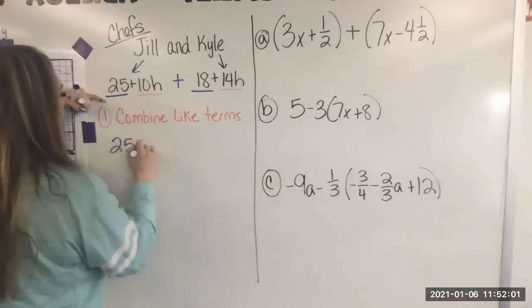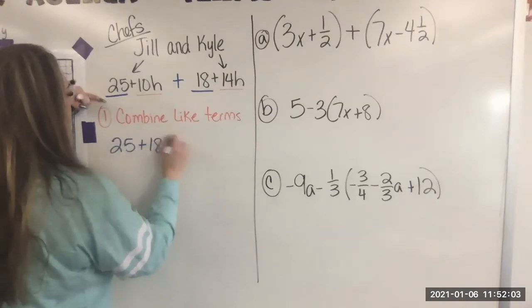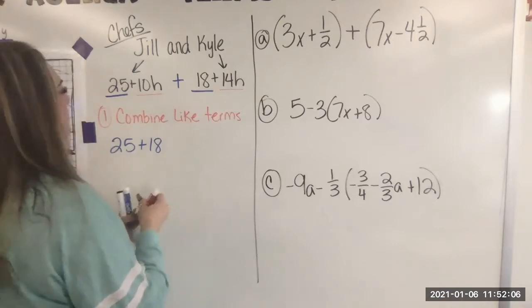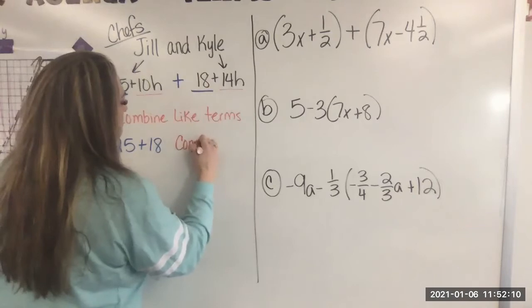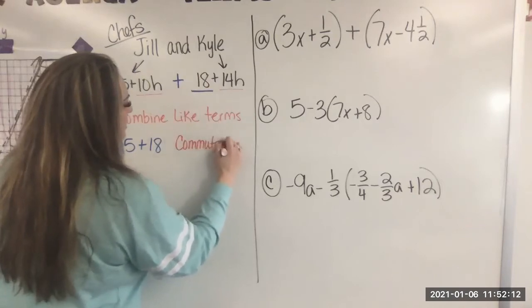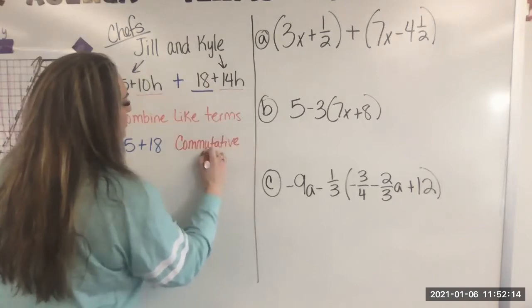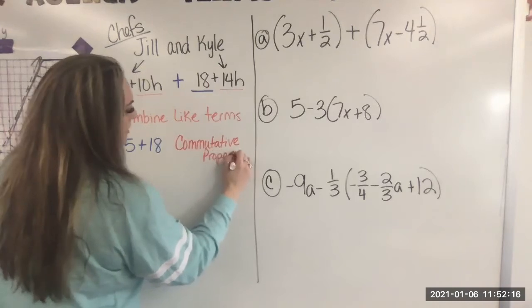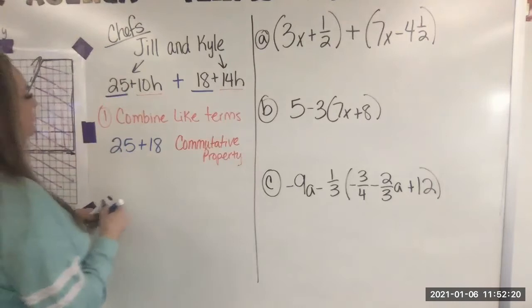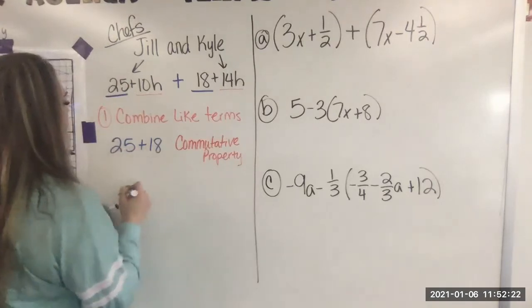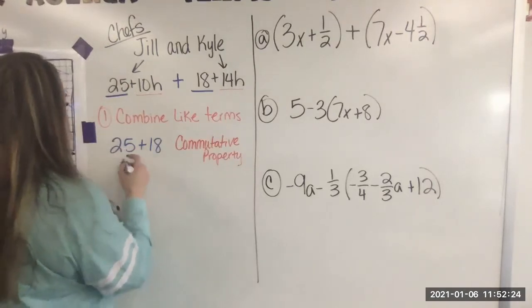So we're using the commutative property. We're rearranging the order. We're moving things around. That's the commutative property to put our like terms next to each other. So we add these together and we get 43.